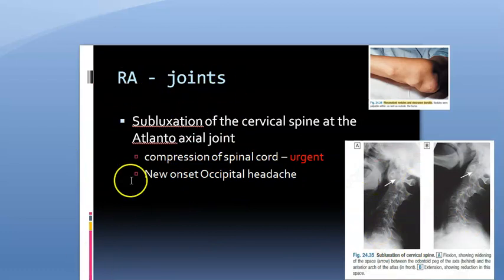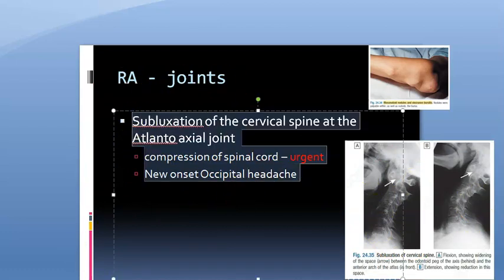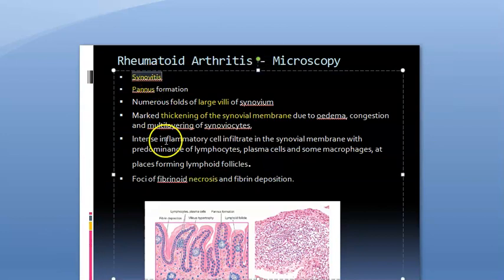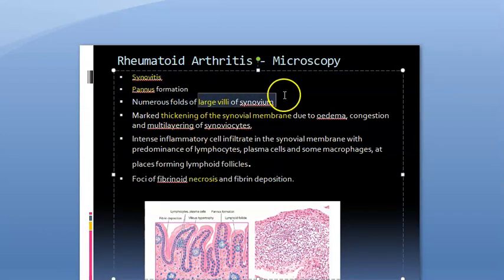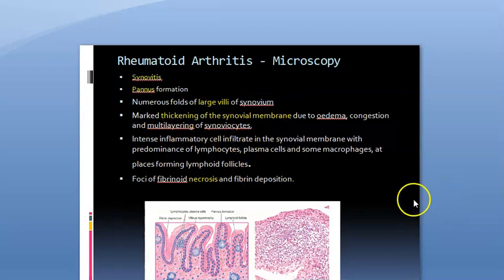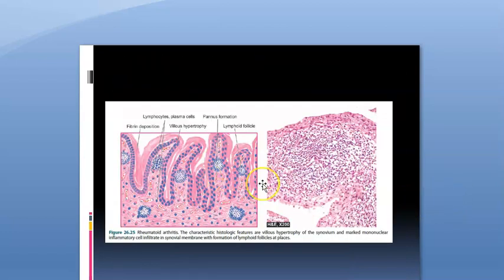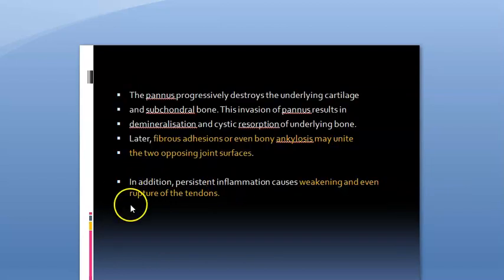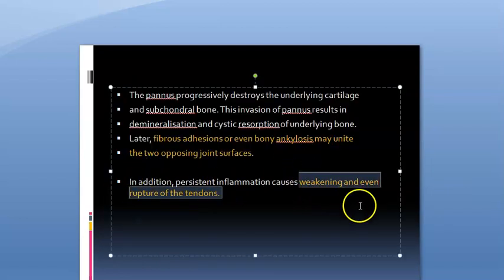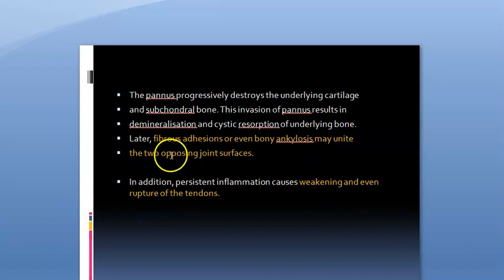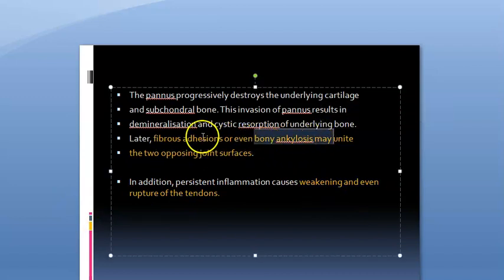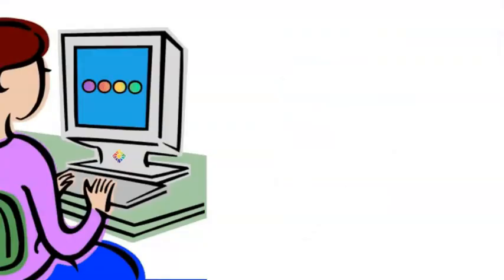In terms of underlying pathology: the joint undergoes synovitis, pannus formation, thickening of the synovial membrane with large villi, necrosis, fibrin deposition, and ultimately joint destruction. Weakening and rupture of tendons, ankylosis, and fibrous adhesions can all occur.